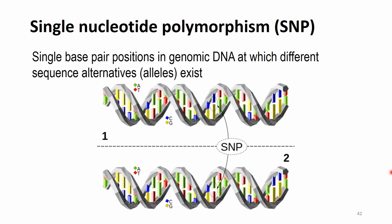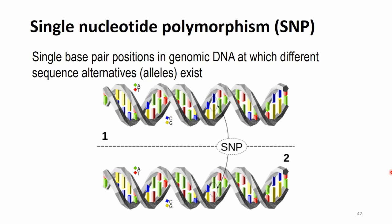The type of marker we will concentrate on — exclusively during these lectures — are the so-called single nucleotide polymorphisms, or SNPs (commonly pronounced 'snips'). A SNP is defined as a single base pair position in the genomic DNA at which different sequence alternatives or alleles exist. Here we have two genomes — individual one and individual two — where most of the genome is totally identical but there is a single point where they differ. It is basically a point mutation.